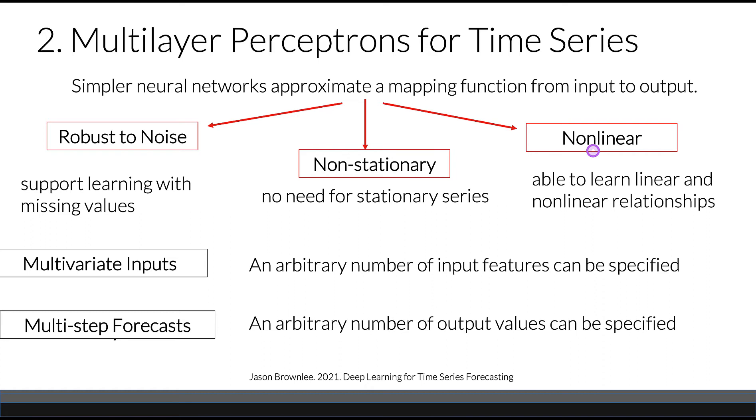More specifically, neural networks can support an arbitrary number of input features, and they support multi-step forecasting where an arbitrary number of output values can be specified.